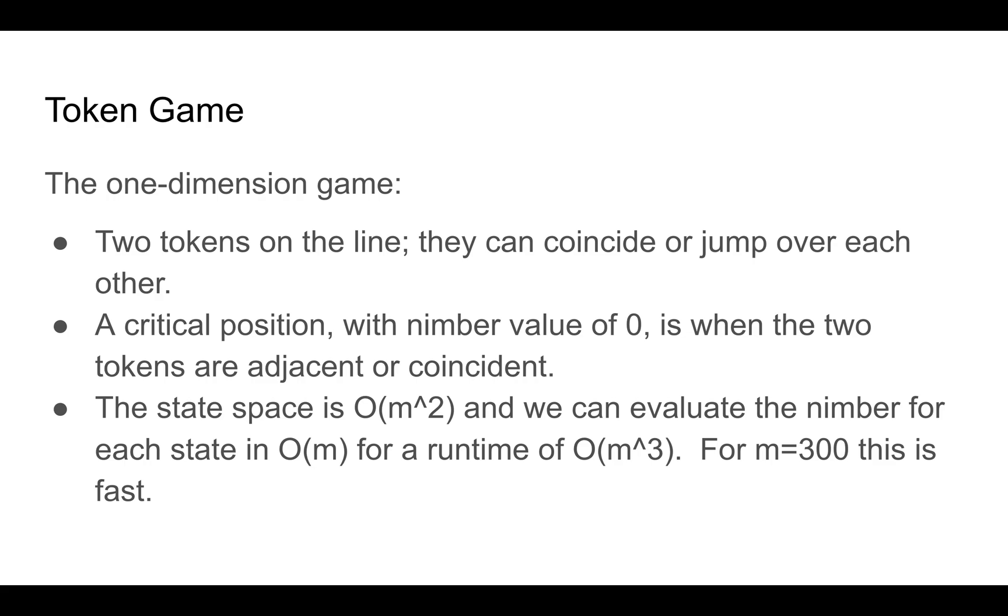In this case, the critical position with the nimber value zero, which is a position which is lost to the player to move, is when the two tokens are adjacent or coincident. But other than that, we use the standard minimum excluded value algorithm to calculate the nimber values. The state space is O(m^2). And we can calculate the nimber for each state in O(m) by simply evaluating the nimbers for all lower moves. So the overall runtime for evaluating the one-dimensional game is O(m^3). For m equals 300, it's plenty fast.